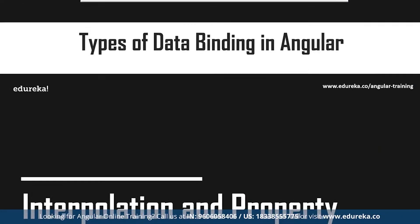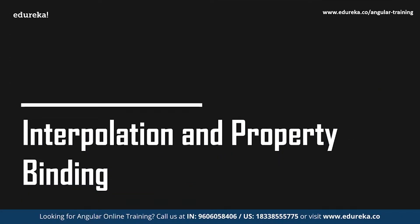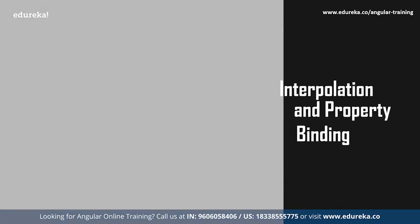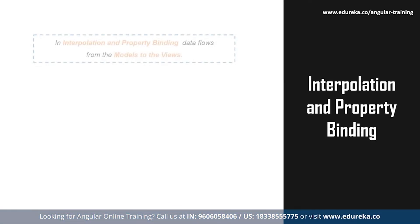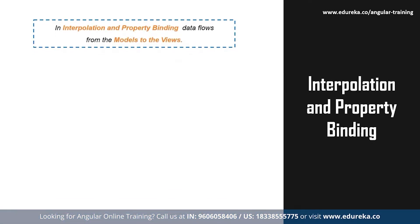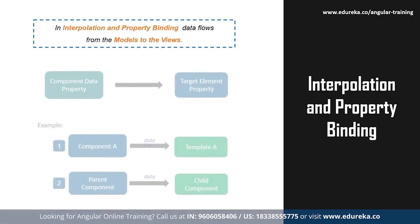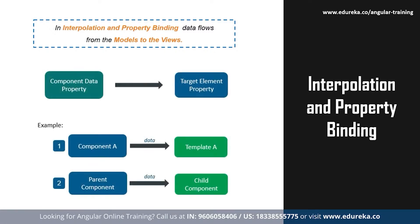In one-way data binding, data flows only in one direction, that is from the models to the views. As mentioned earlier, one-way data binding in Angular can be of three types: interpolation, property binding, and event binding.